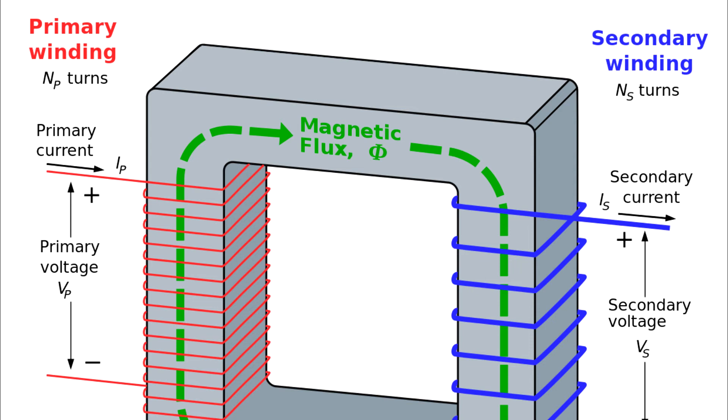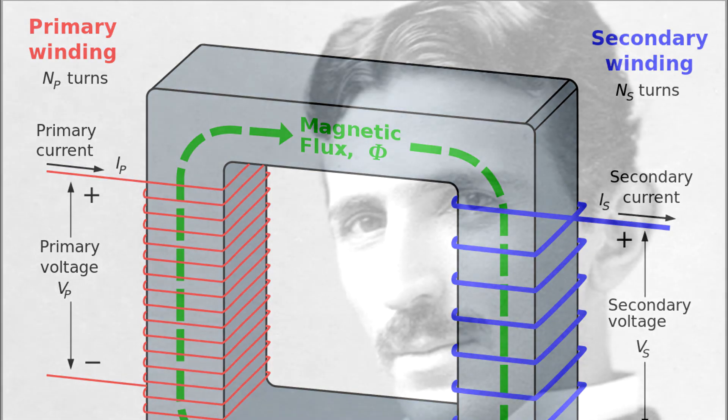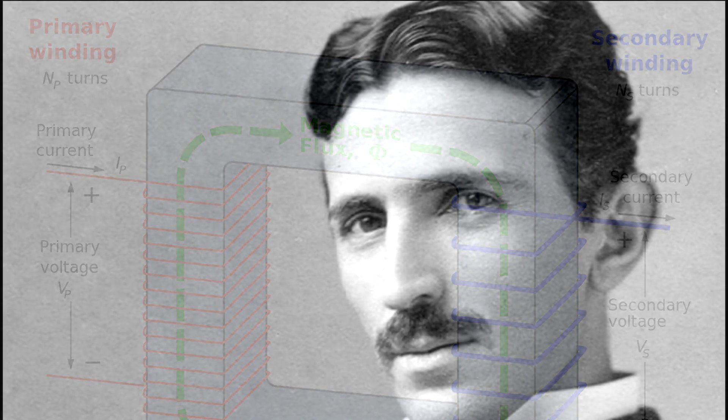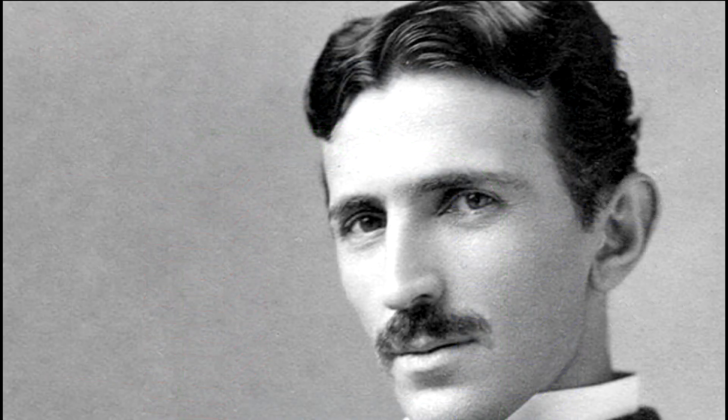Nikola Tesla was the one who came up with the solution. He believed that alternating current was the answer to the problems being faced with DC. AC reverses its direction a certain number of times per second — 50 to 60 times in India — and can be converted to different voltages relatively easily using a transformer.